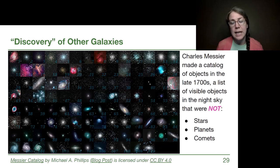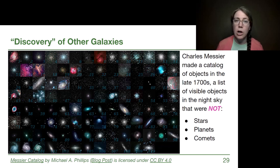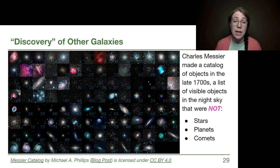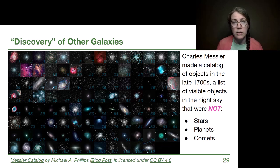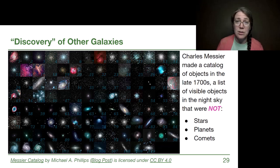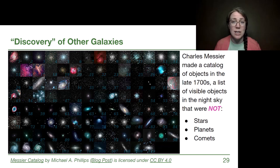Our story begins in the late 1700s where we introduce Charles Messier, a French astronomer who was trying to find comets that he could put his name on and publicize. He would survey the sky with his relatively low power telescope looking for new comets, and along the way he would find other fuzzy things through his telescope that he consistently saw in the same place, so he knew they weren't comets.